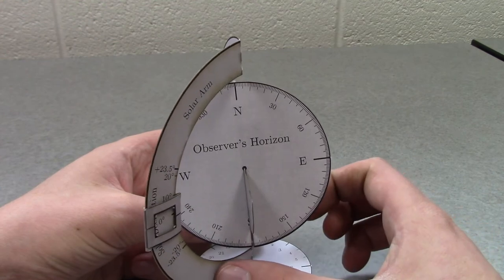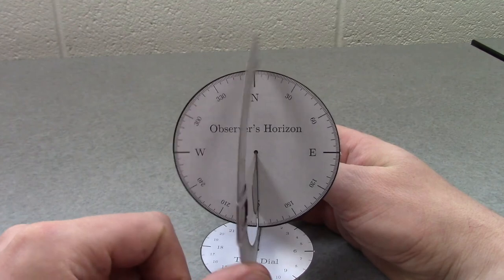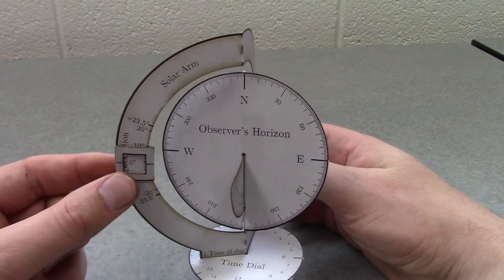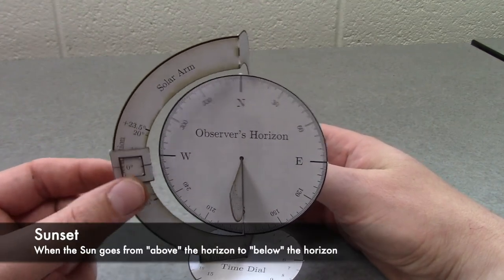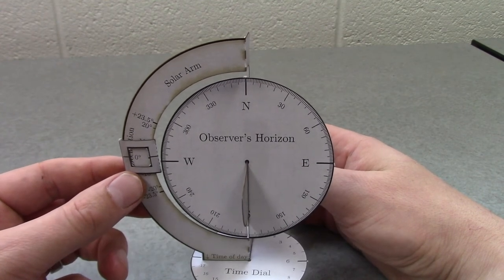And then as the day begins to go to the afternoon, that time is going to get later and later. And eventually the sun is going to pass from in front of the disk here to behind the disk. And this is happening at approximately 6 p.m.